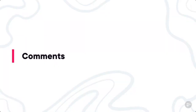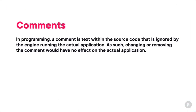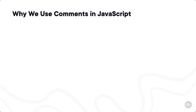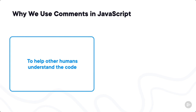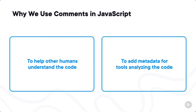Next, we're going to talk about the concept of comments in JavaScript code. In programming in general, a comment is text within the source code that is actually ignored by the engine running the application — changing or removing the comment would have no effect on the actual application. Why would we use comments? Two reasons: first, to help other humans understand the code; and second, we can use comments to add metadata for tools that are analyzing our code.